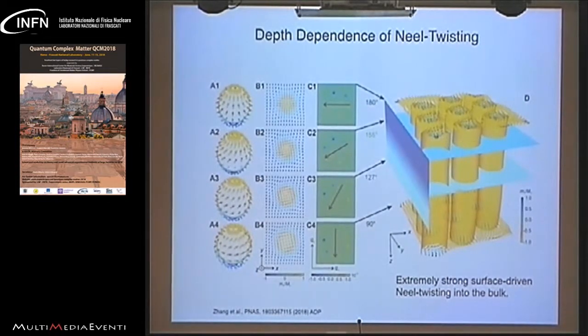This is a summary of this part of the talk. Going from the surface into the bulk what we find is a change from this perfect Néel twisting to perfect Bloch twisting but on a scale which is at least an order of magnitude too large.